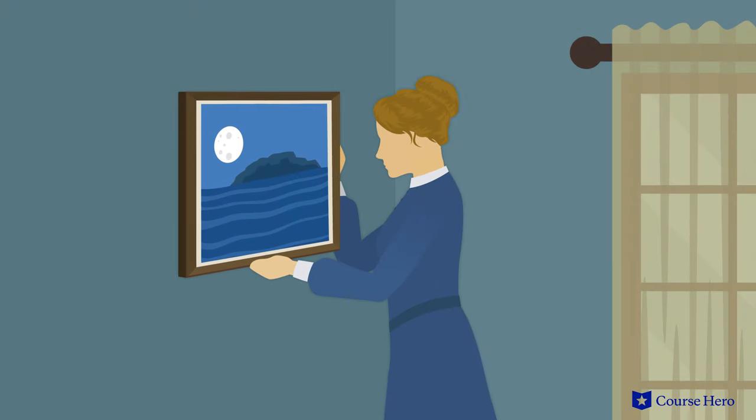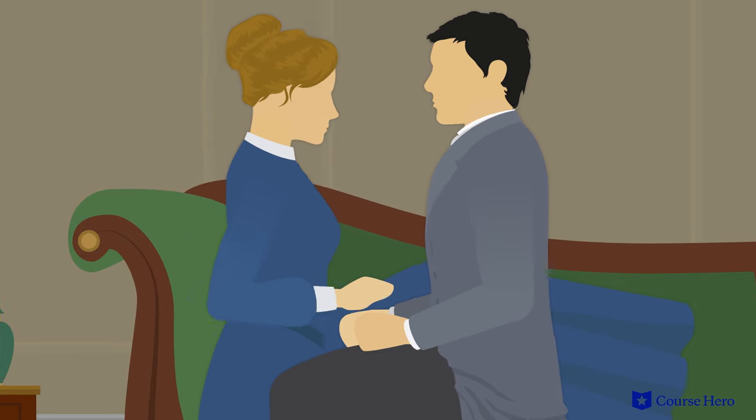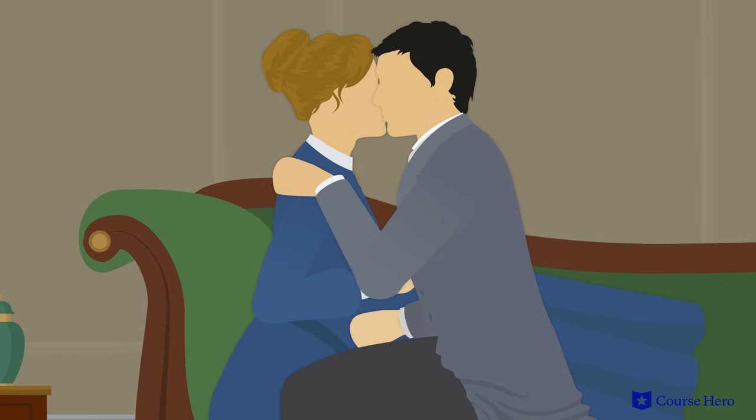Meanwhile, Edna decides to move out of her husband's home to a smaller one, the pigeon house, she can afford on her own, partly with money she earns by selling her artwork. As she sets this plan in motion, she learns Robert is soon to return from Mexico. Her pleasurable anticipation finds an outlet in a sexual encounter with Alcée. Edna feels conflicted about this because she loves Robert, but she enjoys expressing her sexual feelings.